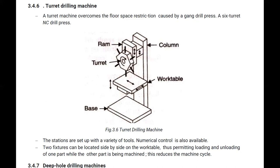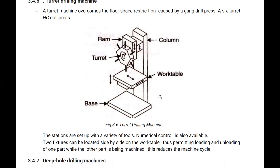In this turret drilling machine, the main feature is that we can use a number of tools — here a six-tool mounted turret is shown. We can perform various operations without wasting time changing tools. This reduces the machine cycle time.